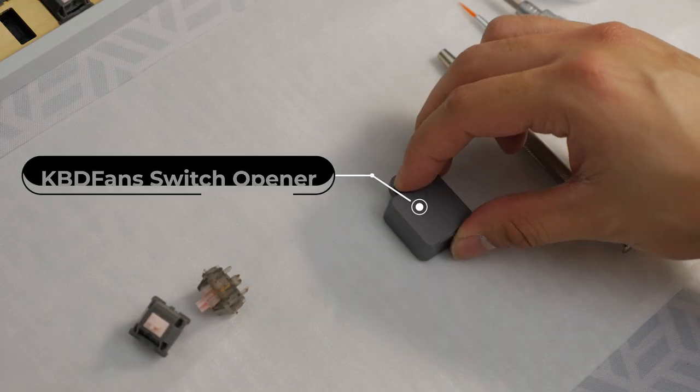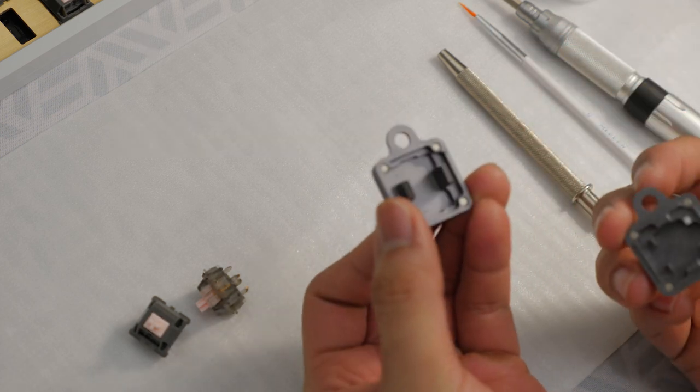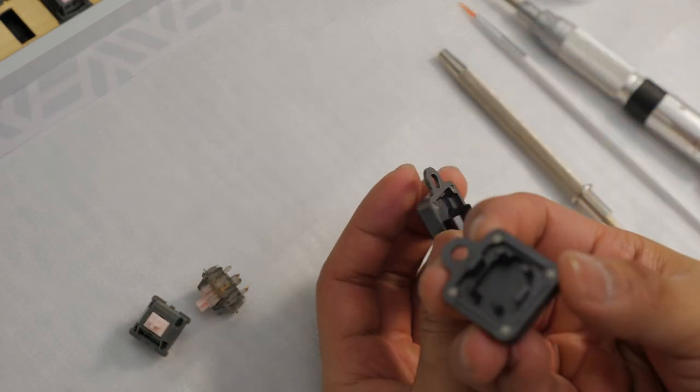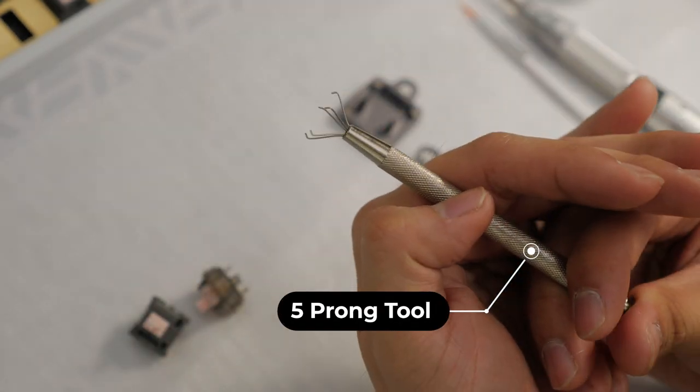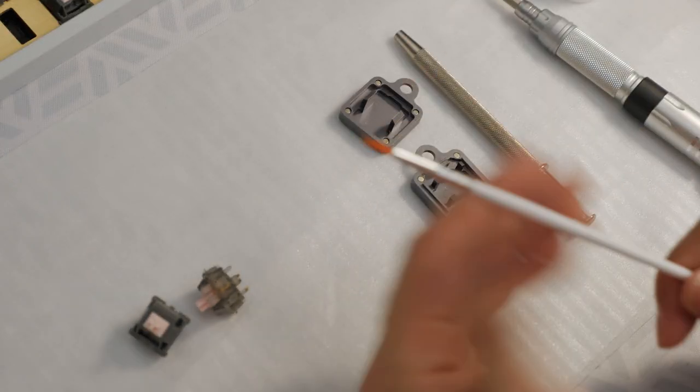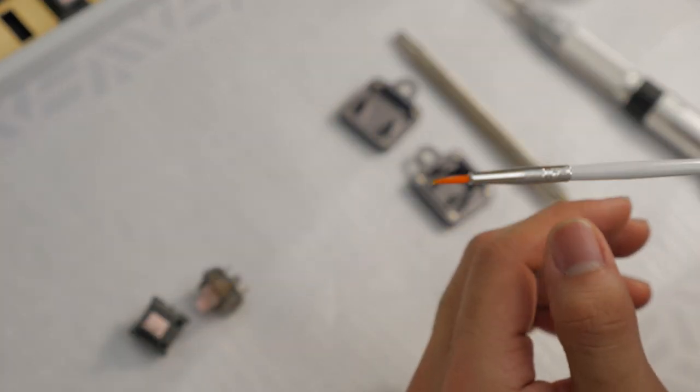Here are a few of the tools that we'll need. Right here is the aluminum switch opener from KBDFans. This is for KL switches and this is for Cherry MX switches. You can see the prongs here will lift up the tabs. This is a jeweler prong. A brush of course to get the lube in there.